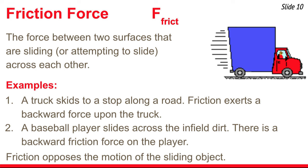Friction force, denoted by the symbol F-frict, is also a contact force. This is the force between two surfaces that are sliding, or at least attempting to slide, across each other. For example, a truck skids to a stop along a road — friction exerts a backward force upon the truck. Or a baseball player slides across the infield dirt — there's a backward friction force between the infield surface and the player's uniform. Friction usually opposes the motion of sliding objects.